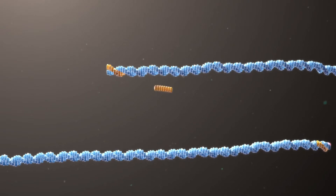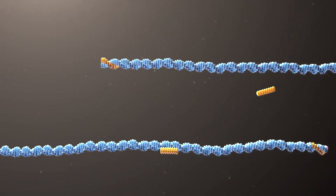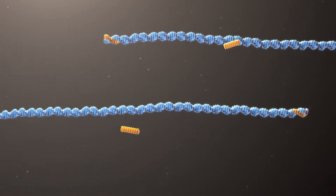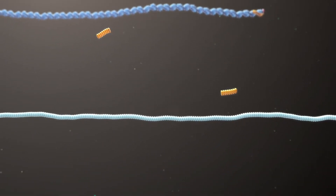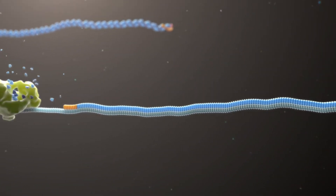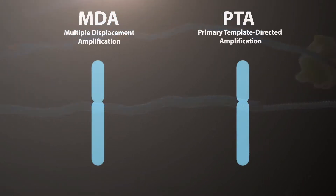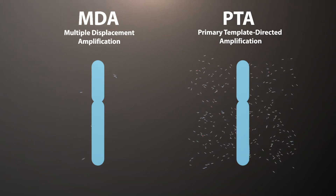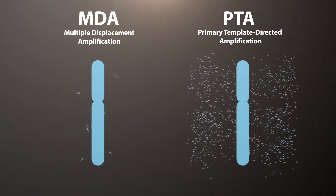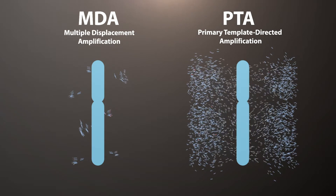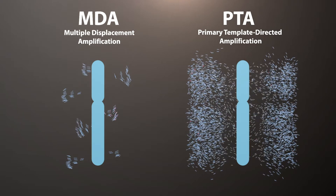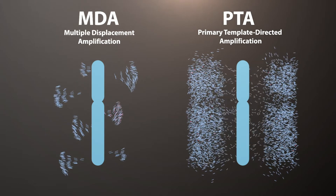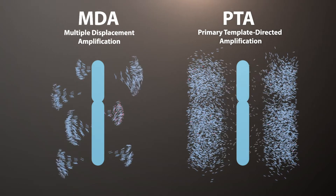Primary template-directed amplification provides researchers with an unprecedented level of cellular resolution, enabling a new era of genomic discoveries across a multitude of applications. PTA offers superior performance compared to traditional MDA. Redirection of primers to the primary template prevents the propagation of errors that is common with traditional MDA. PTA also offers significantly higher breadth of coverage and uniformity, resulting in increased sensitivity.